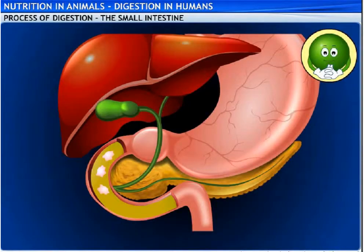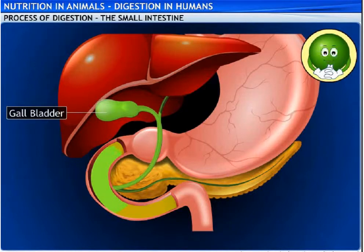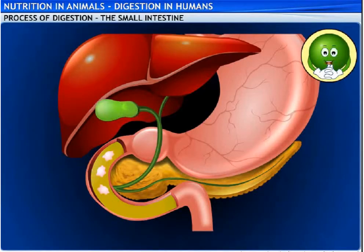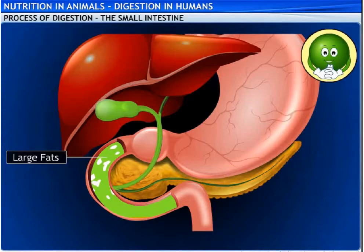The liver secretes a yellowish-green watery fluid called bile. The secreted bile is temporarily stored in a sac called the gall bladder, which has a narrow tube-like structure called the bile duct that opens into the duodenum. Bile plays an important role in the digestion of fats — it breaks larger fat molecules into tiny droplets, thereby increasing the surface area and helping in the easy digestion of fat.